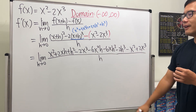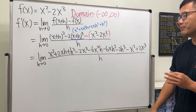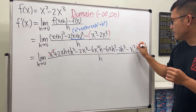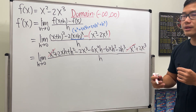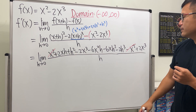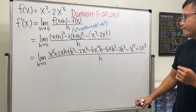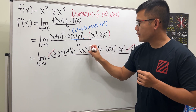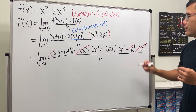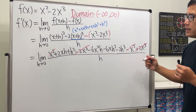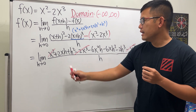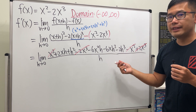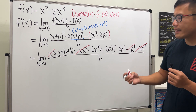It's a long expression, but the x squared terms cancel out nicely. Also, the negative 2x cubed and the positive 2x cubed cancel as well. That's very nice. If you look at all the remaining terms, they all have an h, so we can factor that out.